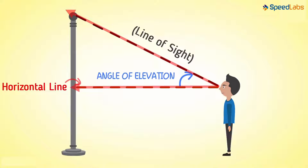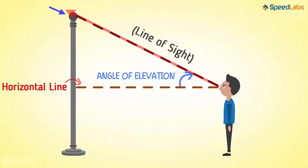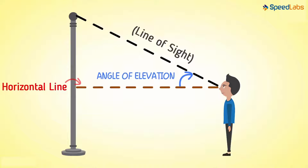Let me repeat this quickly as it is an important concept. When a person is looking up, the angle formed by this line of sight with the horizontal line is called the angle of elevation. Note here that the line of sight is above the horizontal line.